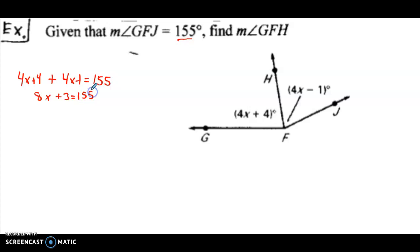To solve for x, we're going to subtract 3 from both sides. We get 152 equals 8x. Then we divide by 8 to get x by itself. x equals 19.